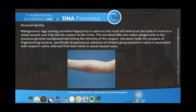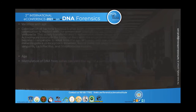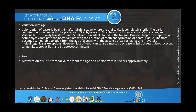In sexual assault cases, fingerprints in saliva of the victim may link a suspect to the crime. Microbial DNA can relate categorically to ancestral genomic background, identifying ethnicity. Literature holds the prospect of fingerprint bacteria — especially Streptococcus salivarius or the viridans group — present in saliva associated with suspects' saliva collected from bite marks. Before six hours of birth there is a sterile environment; after six hours, bacterial colonization begins with Staphylococcus, Streptococcus, Enterococcus, Micrococcus, and Veillonella.